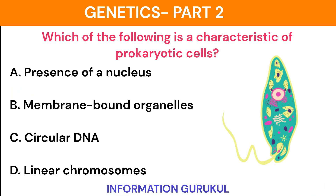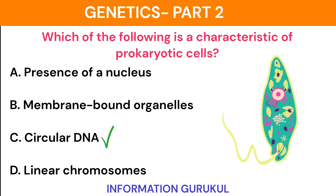Which of the following is a characteristic of prokaryotic cells? CIRCULAR DNA